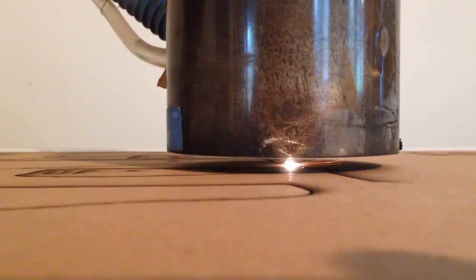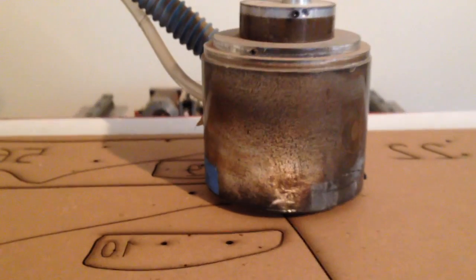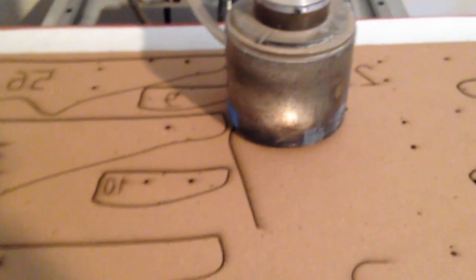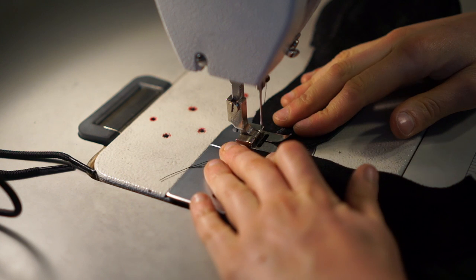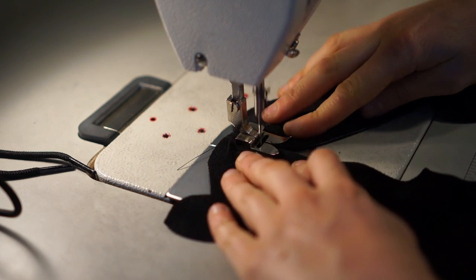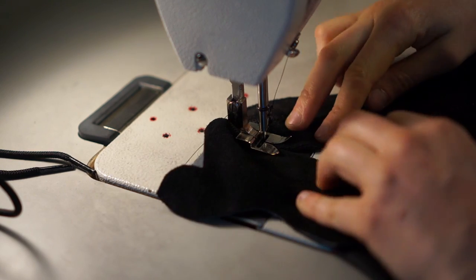Parts for the last are cut on a 100-watt CO2 laser cutter. Suede patterns for the shoe's upper are also laser cut and then sewn together on an industrial sewing machine.